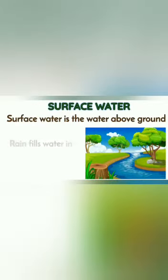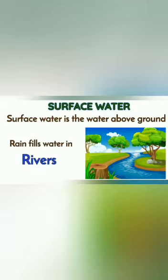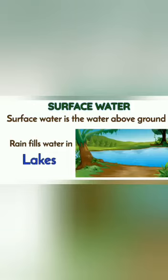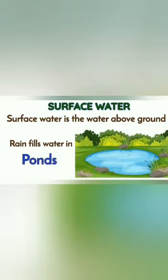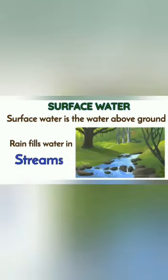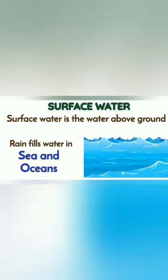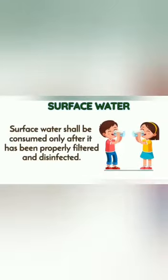Surface water. It is the water that we see above the ground. It comes from rivers, lakes, ponds, streams, sea, and oceans. Surface water shall be consumed only after it has been properly filtered and disinfected.